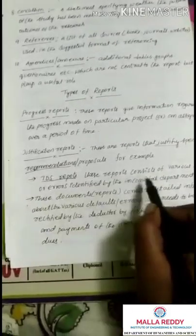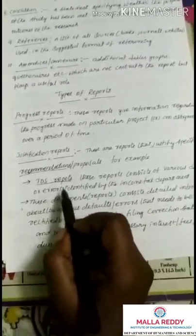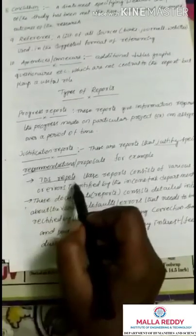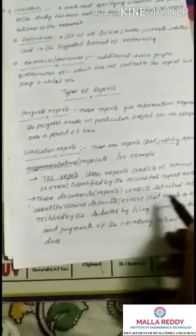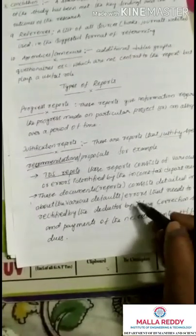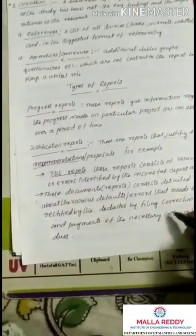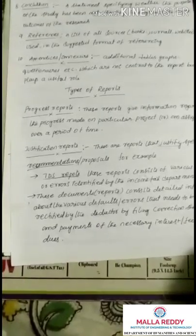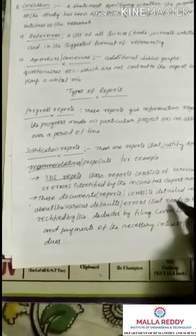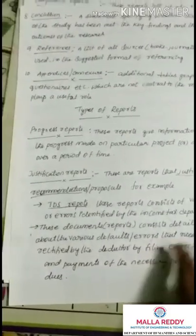For example, TDS reports. These reports consist of various defaults or errors identified by the income tax department. At the end of the financial year, business people submit their TDS report. The income tax department identifies errors, sends documents back to the person, who then corrects the errors and resubmits the corrected statements. This justifies specific recommendations and proposals.